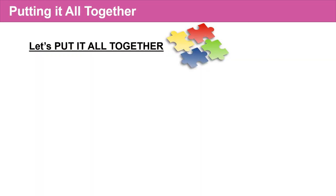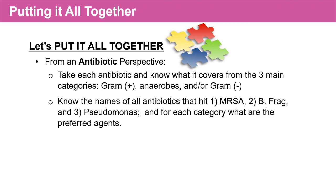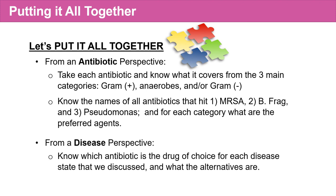We've completed discussing the material on antibiotics, so let's put it all together. From an antibiotic perspective, take each antibiotic and know what it covers from the three main categories — gram-positive, anaerobes, and gram-negatives. Know the names of all the antibiotics that hit MRSA, B. fragilis, and Pseudomonas, and for each category, what are the preferred agents. From a disease perspective, know which antibiotic is the drug of choice for each disease state and what the alternatives are. This is not an easy task — it will take a lot of practice and real-world application. But keep working at it and you'll soon become more confident and achieve good results.